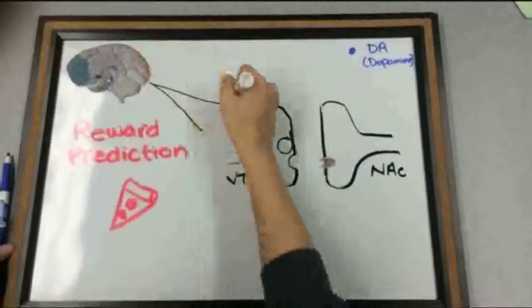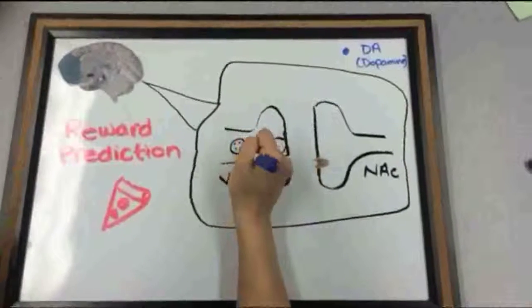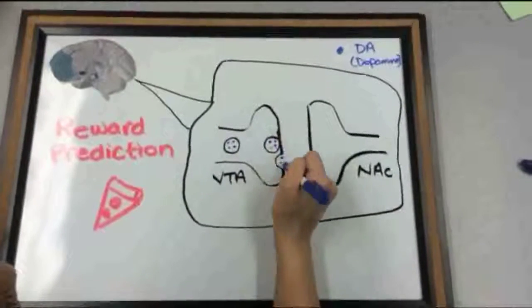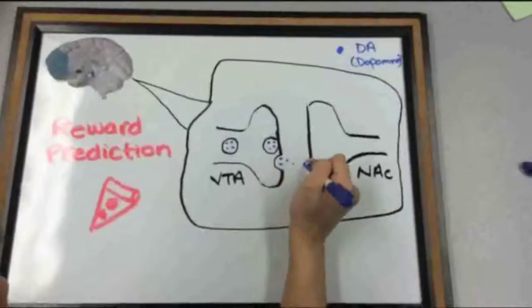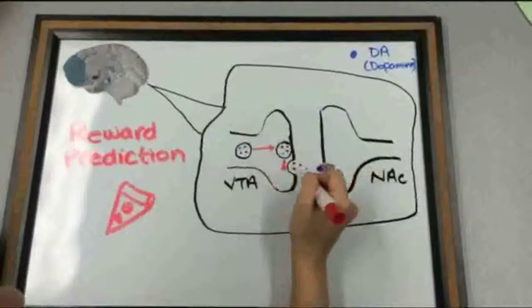Dopamine serves as a predictor of reward when a cue associated with pleasure is presented, like the smell or picture of food. The VTA neurons release the signaling molecule dopamine onto the neurons of the NAC to prepare you for the reward.